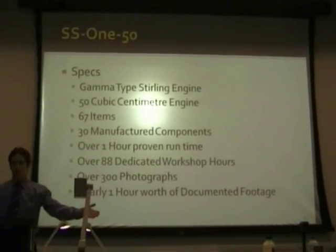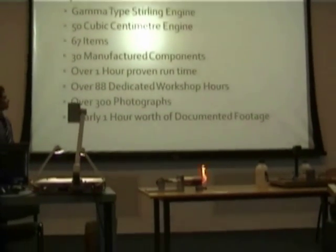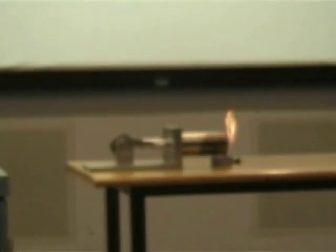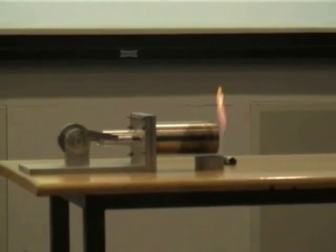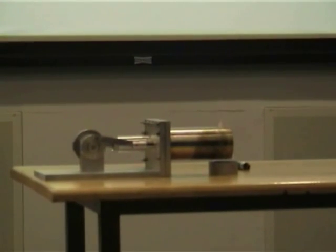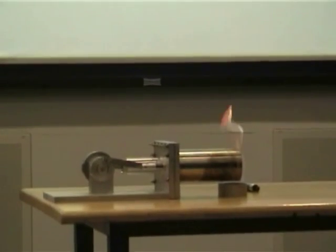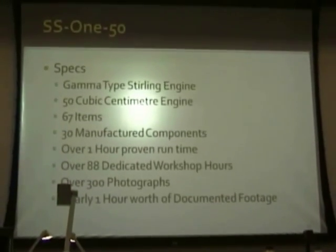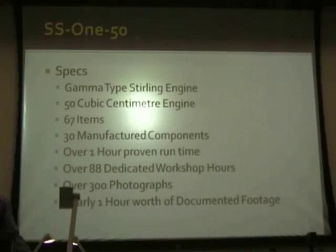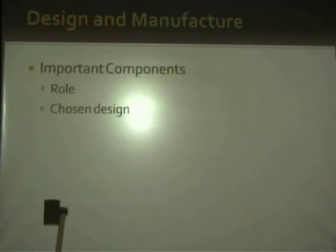This is the SS150 — the Stirling System, first iteration, 50cc. It's a gamma-type Stirling engine, 50 cubic centimeters, with 67 items — 30 of which I manufactured myself in the workshop. I've put in 88 dedicated workshop hours and countless more in design, with 300 photographs and nearly an hour's worth of documented footage.